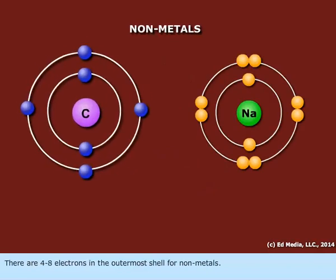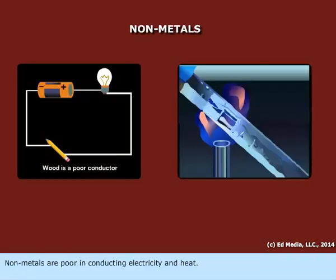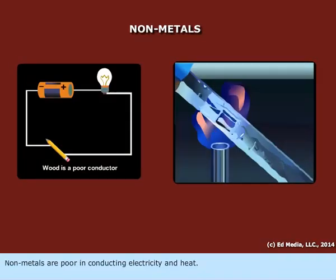There are four to eight electrons in the outermost shell for nonmetals. Nonmetals are poor in conducting electricity and heat.